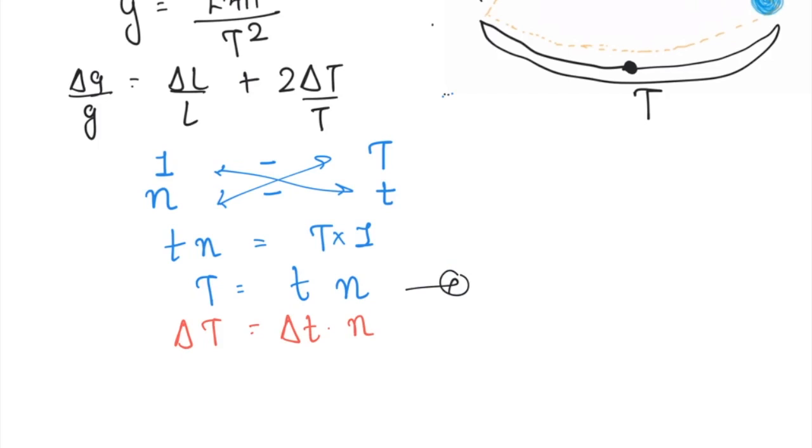And now multiplying delta on both sides, I can say that delta T equals delta small t times n. Hence, from equations 1 and 2, delta T by T equals delta t times n upon t times n, and n will be cancelled out. Hence, delta capital T by T is always equal to delta small t by t, irrespective of any oscillations you count.